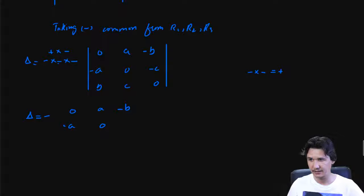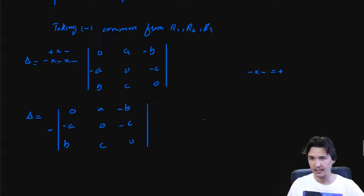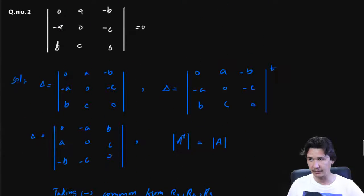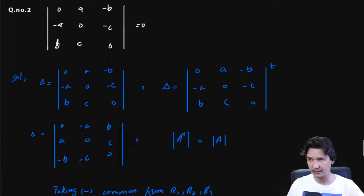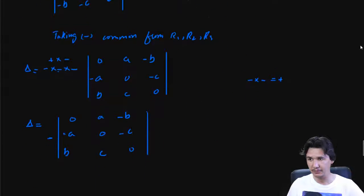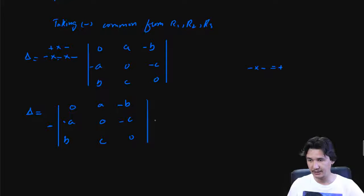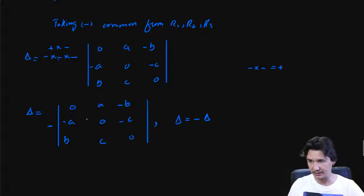The resulting matrix inside the determinant is: 0, a, minus b; minus a, 0, minus c; b, c, 0 — which is exactly equal to our original delta. So we now have delta equals minus delta, since the matrix is the same but we have the minus sign in front.